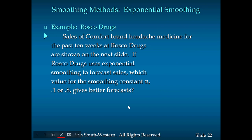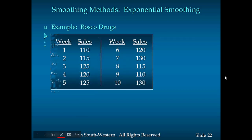Let's look at the Rascal Drugs example again — sales of comfort brand headache medicine for the past 10 weeks. If Rascal Drugs uses the exponential smoothing method to forecast sales, which value of the smoothing constant α gives better results: α = 0.1 or α = 0.8? We'll see which one gives us better forecasting accuracy.